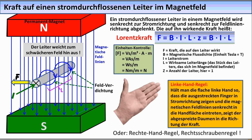Dieses verstärkte Feld übt eine Kraft auf den Leiter aus, sodass er nach links ausweicht. Man nennt diese Kraft Lorentzkraft. Zur Ermittlung der Richtung dieser Kraft gibt es eine Eselsbrücke, nämlich die linke Handregel. Berechnen lässt sich die Kraft nach der angegebenen Formel. Die Kraft ist also umso größer, je größer die äußere Flussdichte B, der Leiterstrom I, die wirksame Leiterlänge L — also die Länge des Leiterstücks, das sich im äußeren Feld befindet — und die Leiterzahl Z sind. Die Kraft erhält man in Newton, wenn man den Strom in Ampere, die Flussdichte in Voltsekunde pro Quadratmeter und die Leiterlänge in Meter einsetzt.